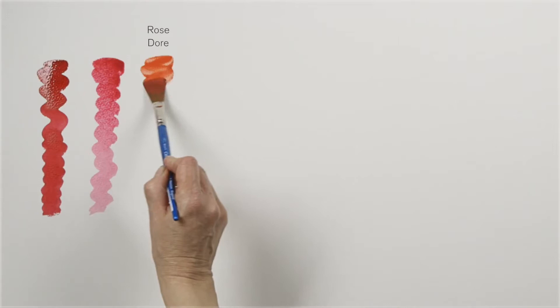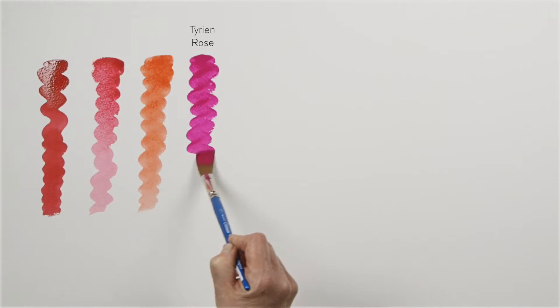Rose madder is unique in colour possessing a cool clear tint that is hard to replicate. Tyrian rose was originally the secretion of a sea snail and a vibrant powerful pink. Here I'm using gouache which is highly pigmented.